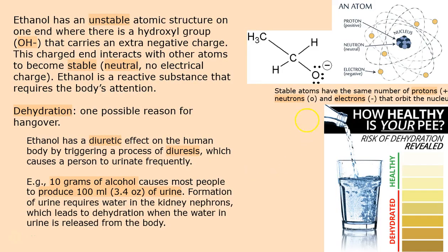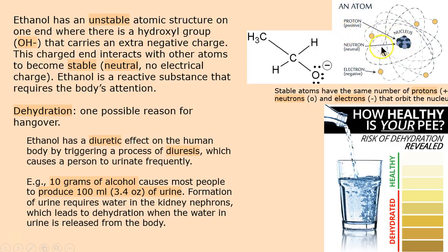Ethanol is a little bit different at one end, because it has a negative charge. That makes it reactive. In reactive substances, you might think, well, what do I care? But think of radioactivity — it can kill you. Stable atoms have the same number of protons, neutrons, and electrons. But in ethanol, it has a negative charge, which makes it reactive. That's a little part of the story.